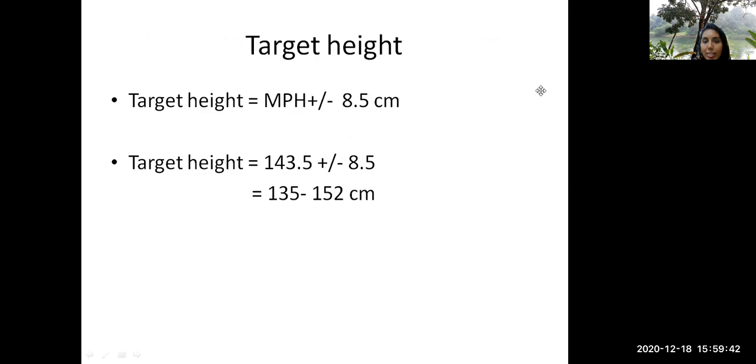So target height is plus or minus something to the mid-parental height. So here is importance. There is a slight difference here because most of the previous books say MPH plus or minus 8 to 8.5 centimeters is taken as the target height. The recent IAP 2015 chart, they are basing MPH plus or minus 6 centimeters. This 8.5 centimeters is two standard deviations actually. The MPH plus or minus two standard deviation difference, that is the target height. If you're taking MPH plus or minus six centimeters, you're taking one standard deviation. That is actually the difference.